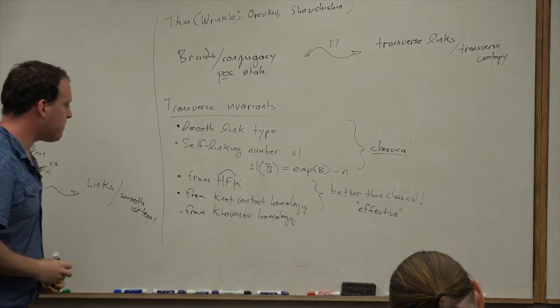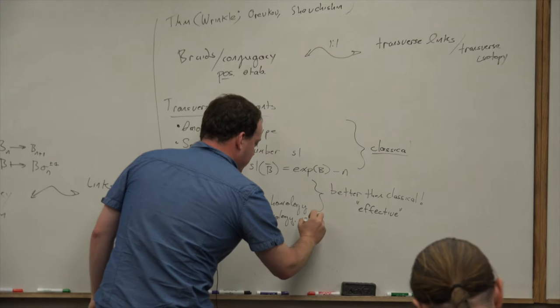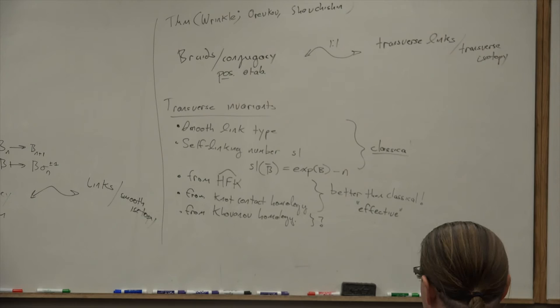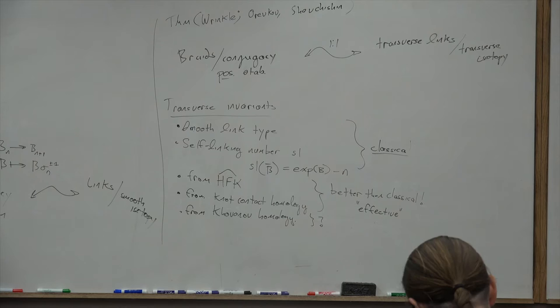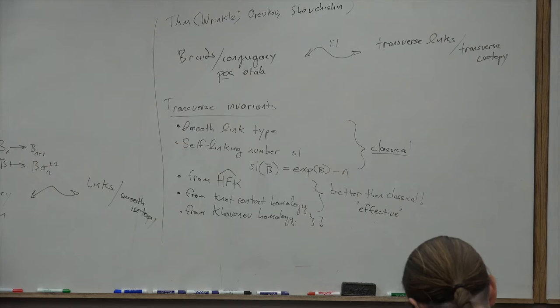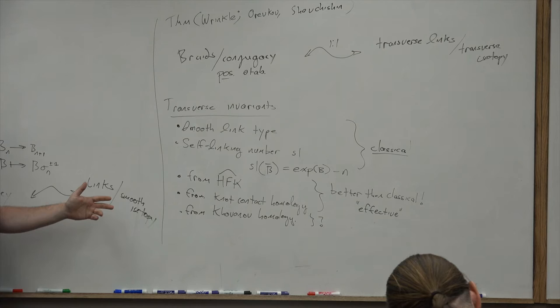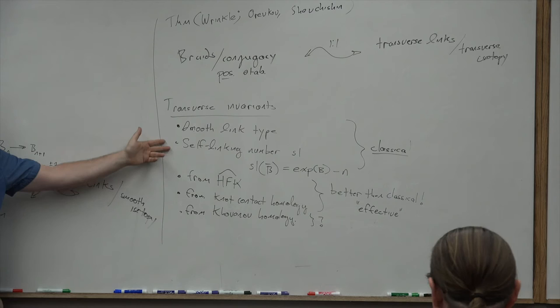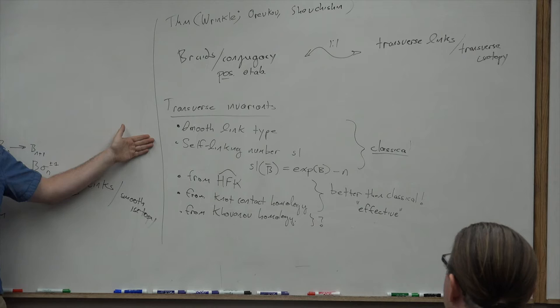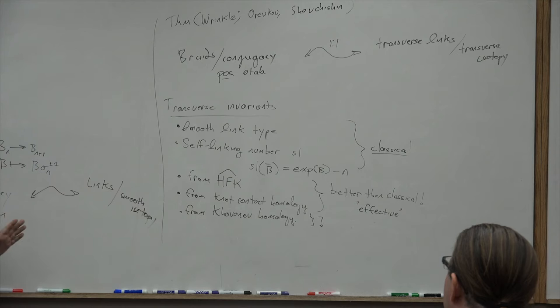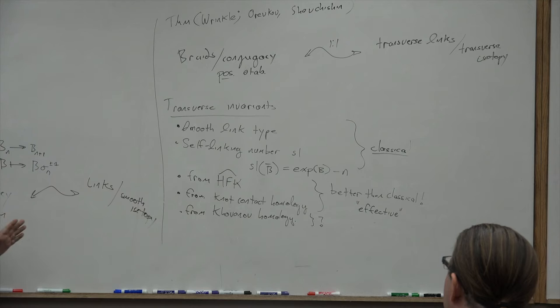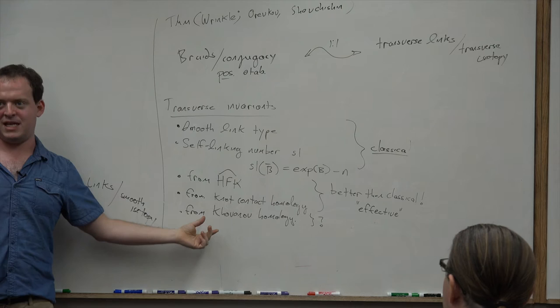The invariant I'll tell you about today is related to Khovanov homology. The transverse element in Khovanov homology — it's an open question whether it's effective. It's at least as good as the classical invariants but it's not known whether it's better. Non-classical transverse invariants essentially require jumping to Floer homology, which illustrates this is a hard problem. What I like about Khovanov homology is I can give you a rough idea of how it works by the end of the talk.